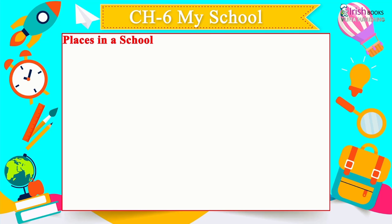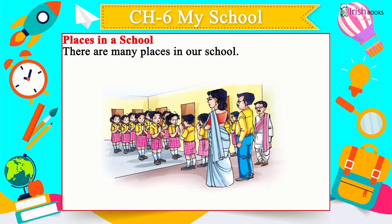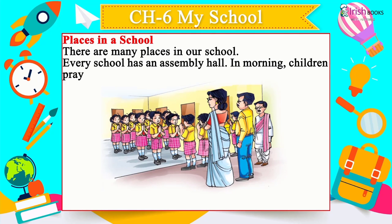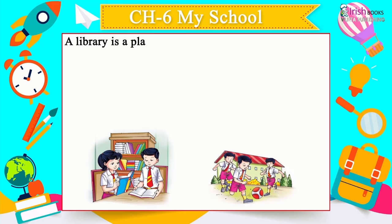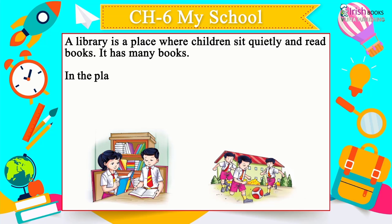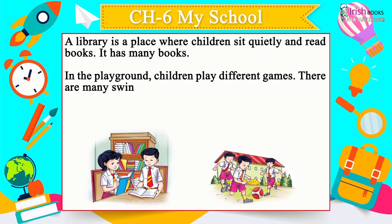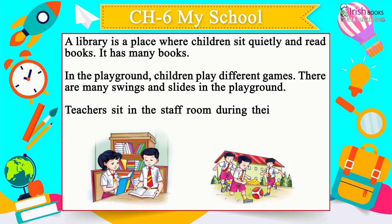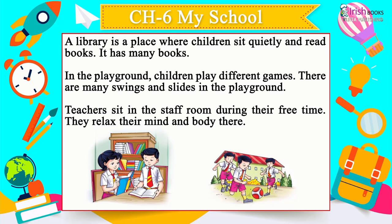Places in a School: Every school has an assembly hall where children pray together in the morning. A library is where children sit quietly and read books. In the playground, children play different games — there are swings and slides. Teachers sit in the staff room during their free time to relax.